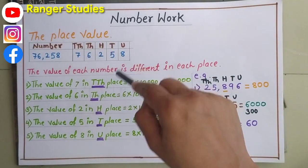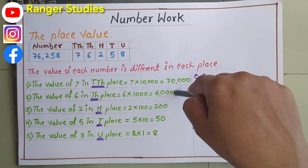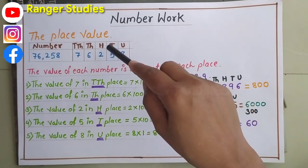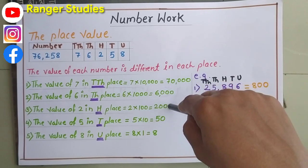The value of 6 in the thousand place, 6 multiplied by 1,000, we get 6,000. The value of 2 in hundred place, 2 multiplied by 100, we get 200.